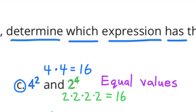Part c: 4 to the second power and 2 to the fourth power. 4 to the second power is 4 times 4, which is 16. And 2 to the fourth power is 2 times 2 times 2 times 2, which is also 16. These are equal values — 4 to the second power and 2 to the fourth power are equal.